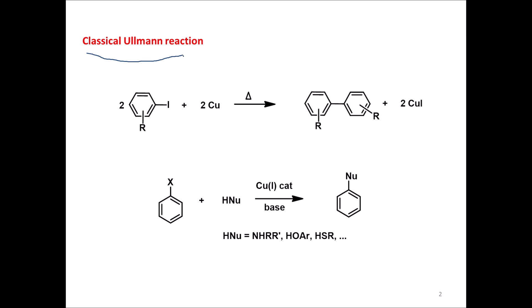Coming to the classical Ullmann reaction — this was done way back in 1901 by a scientist called Fritz Ullmann. In this classical reaction, we have two equivalents of an aryl iodide, we use copper as a catalyst, we heat it, and we get a symmetrical biaryl. So this is one of the classical Ullmann reactions: getting symmetrical biaryl compounds by using two equivalents of a particular aryl halide compound.